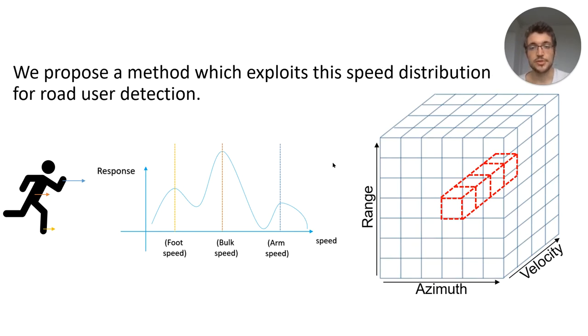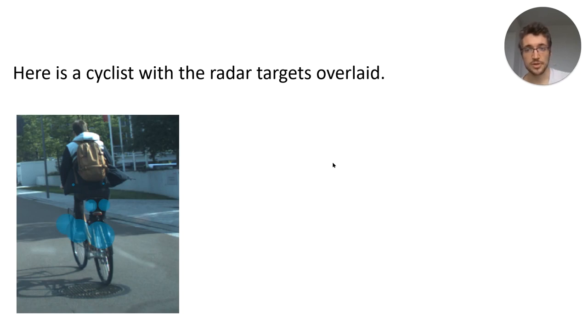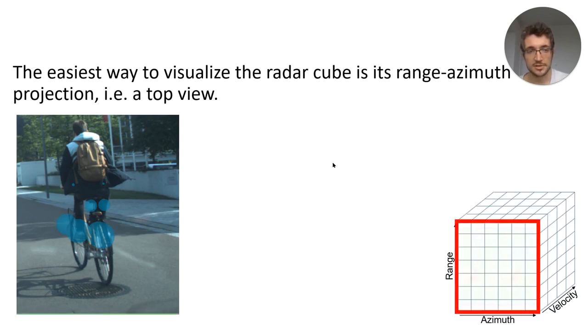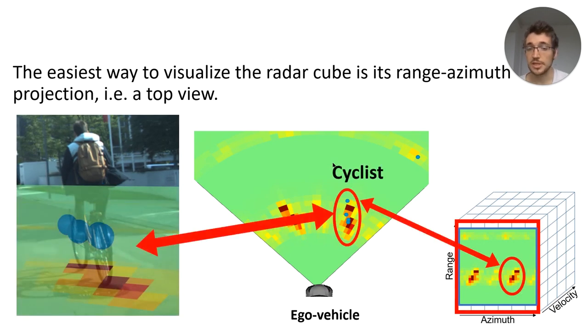We propose a method which exploits this speed distribution from the 3D radar cube for road user detection. Let me give you an example of how it works. Here's a bike with the radar reflections overlaid in the camera view, and here is the 2D projection of the radar cube of the same scene. So it's only range and azimuth now. The velocity axis is summed up. You can see as the radar targets are overlaid with the blob in the radar cube.